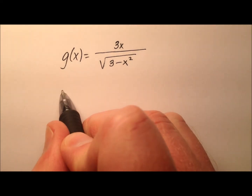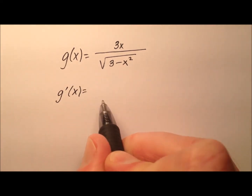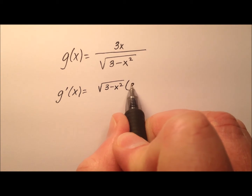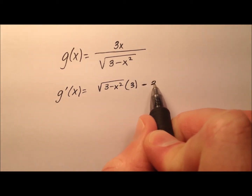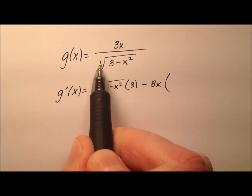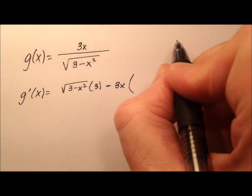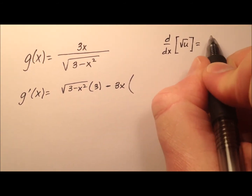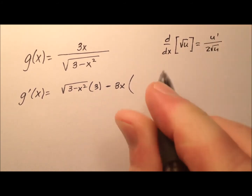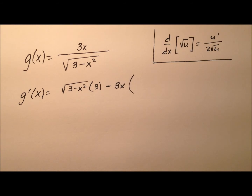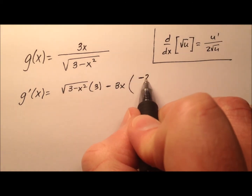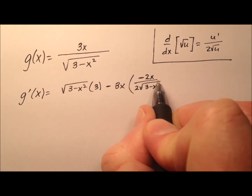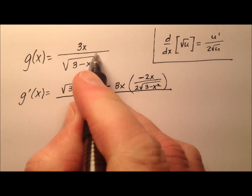Let's work this first derivative. The quotient rule says it's low times the derivative of the high — so the derivative of 3x will be 3 — minus the high, which is 3x, times the derivative of the low. The derivative of a square root function will be u prime over 2 times the square root of u. So using that, we get negative 2x over twice the square root of 3 minus x squared, and that's all over the denominator squared.